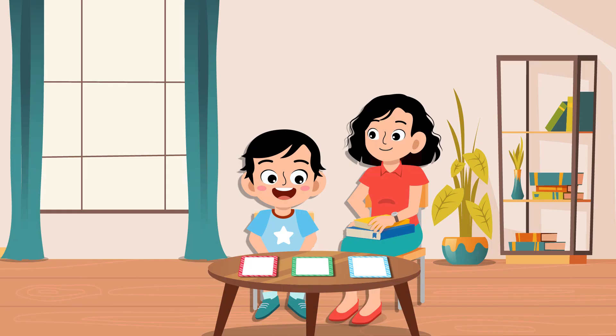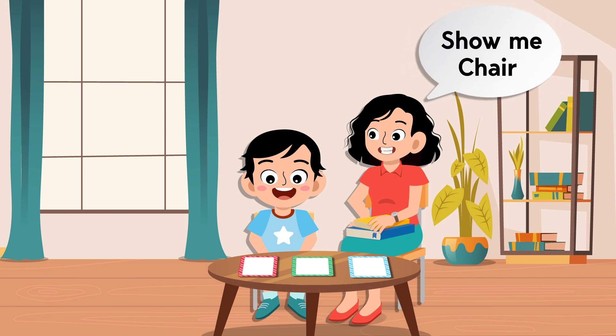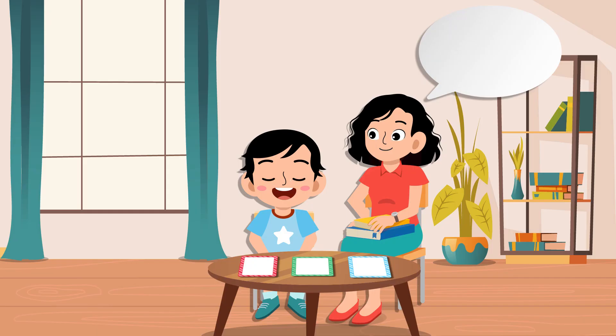Step 3. Once you have the child's attention, give the instruction 'show me chair.' Wait for 3 to 5 seconds for the child to point to the picture chair. If the child responds correctly, immediately reinforce the child by saying awesome, great, etc.